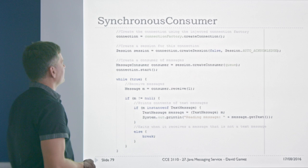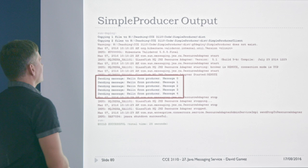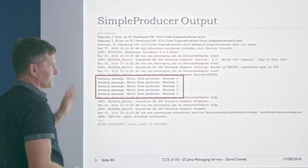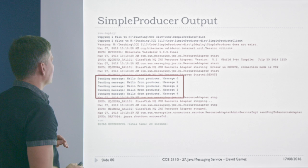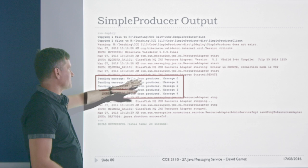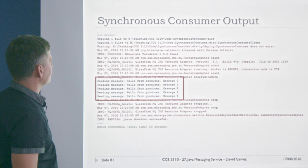Now the producer works in a similar way — it also has injected dependencies, and uses the queue to create a producer and send messages. You create the connection, create a session, create a producer, create a text message, set the text, and send the message. This is done five times to send five messages. The command-line output shows 'Hello from producer' along with some server logging output.